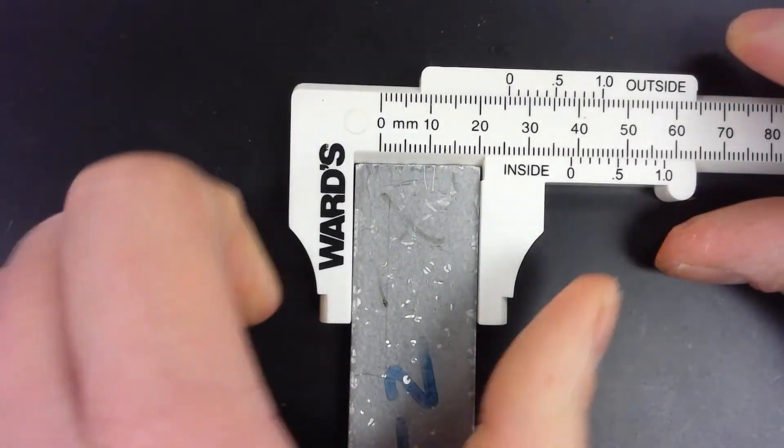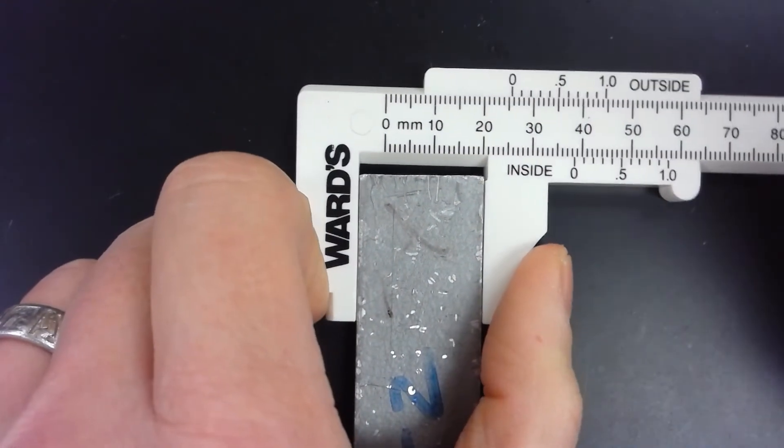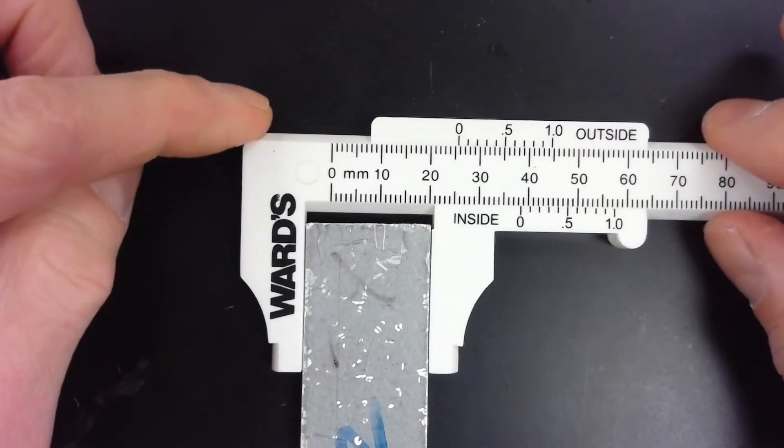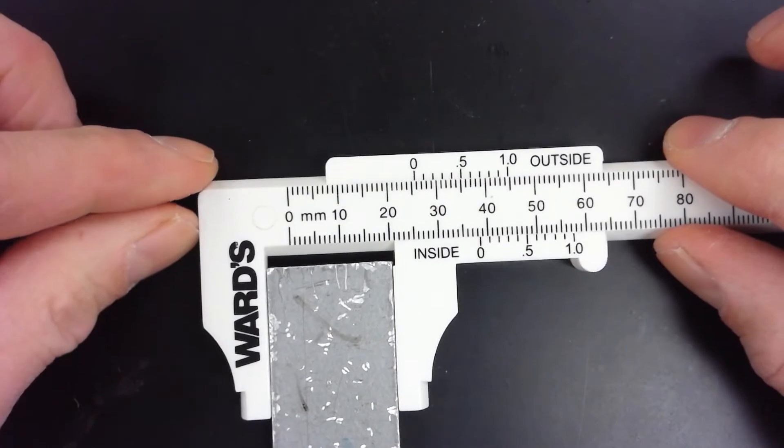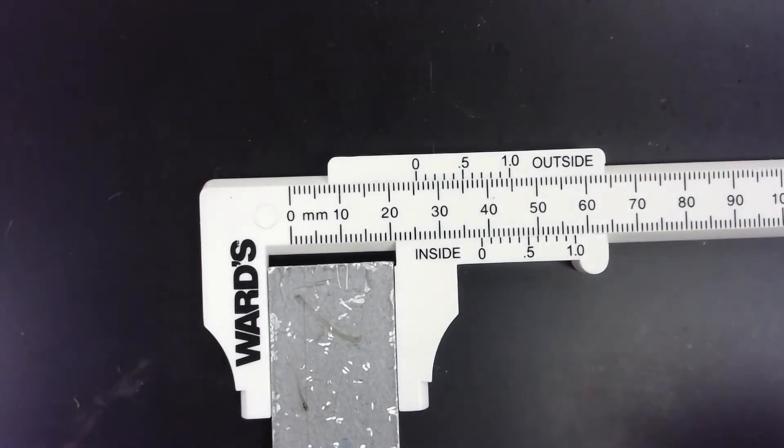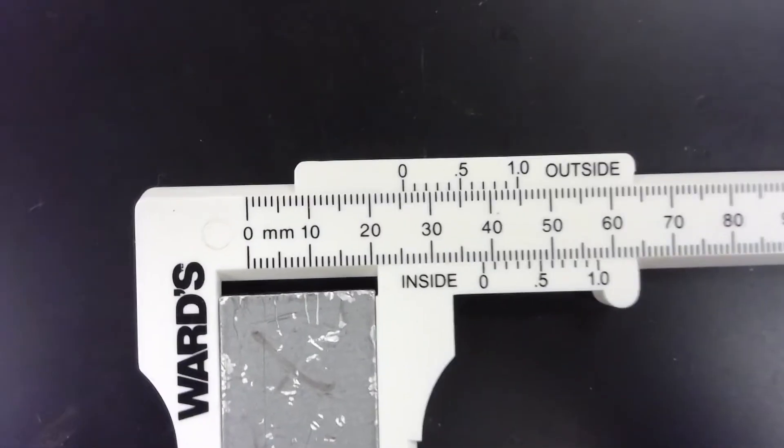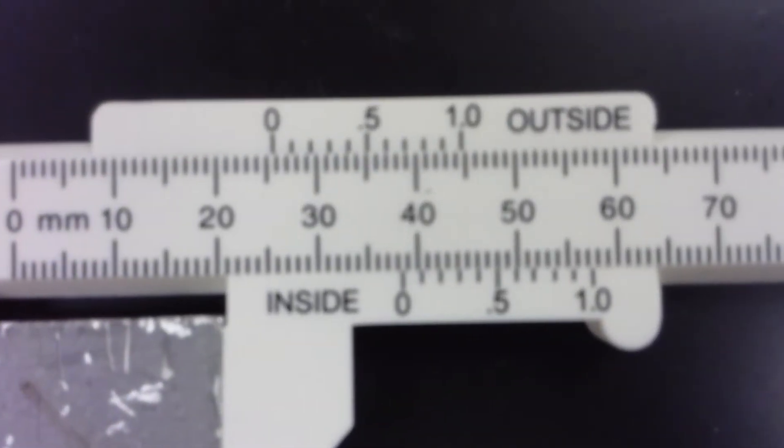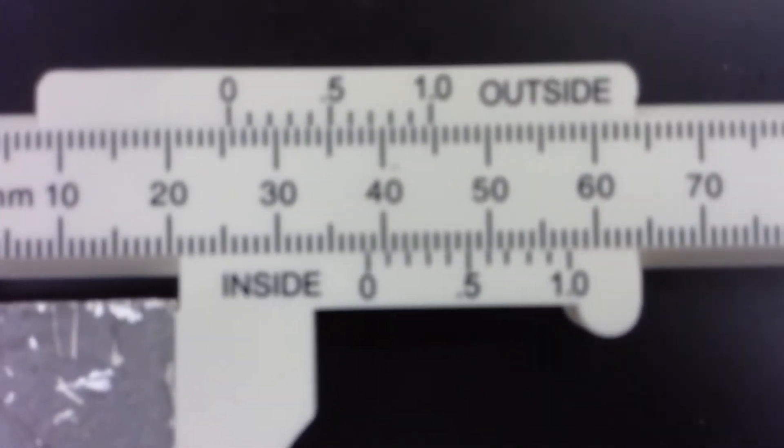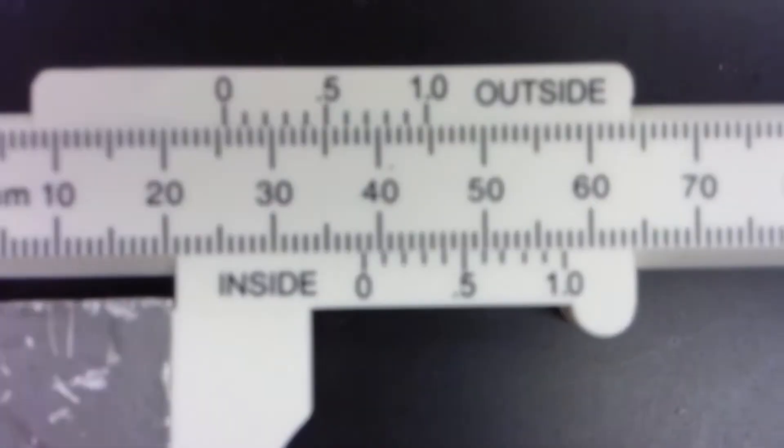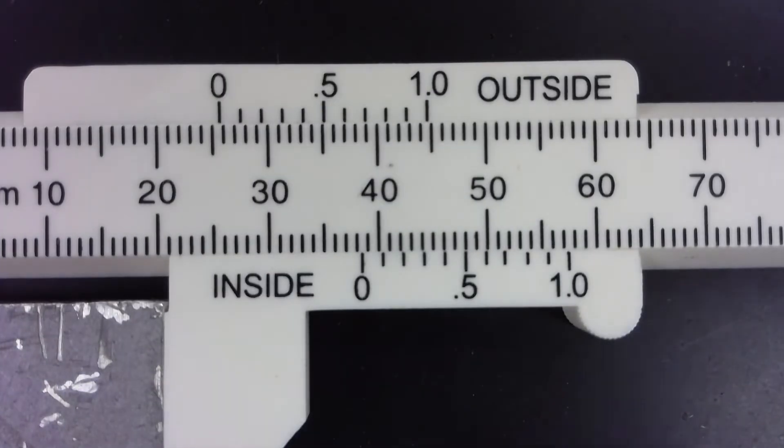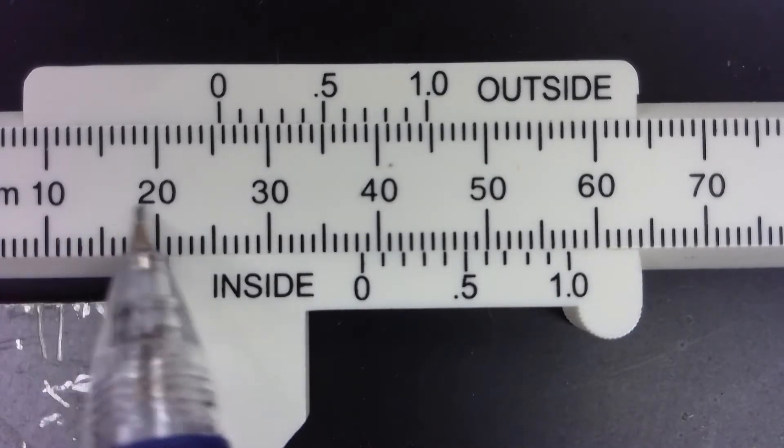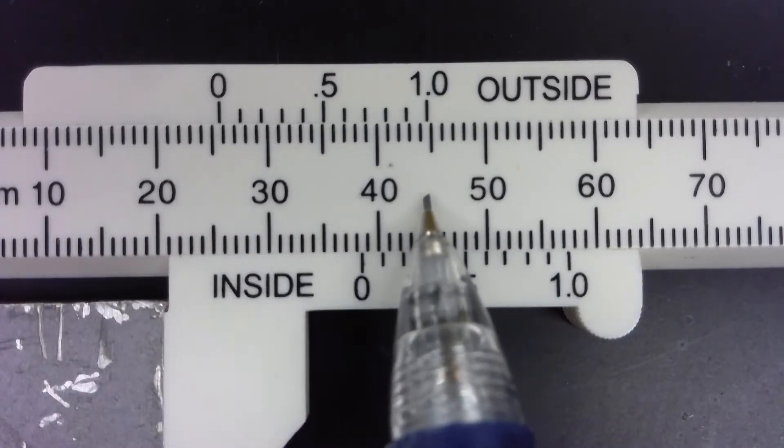We clamp it down lightly. Don't squeeze too hard on it. And then we look to see what the scale reads. I'll zoom in here so we can see much better. Now this scale here is in millimeters.